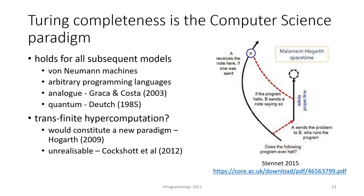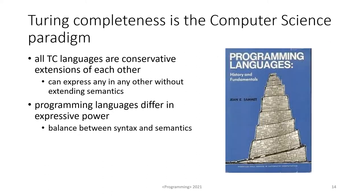What about trans-finite hypercomputation? Well, that really would constitute a new paradigm as Mark Hogarth has argued. However, Paul Cockshot, Lewis McKenzie and I have argued that it's both theoretically and practically unrealisable. Also, all Turing complete languages are what are called conservative extensions of each other — you can express any Turing complete language in any other Turing complete language without extending the semantics of the expressing language. Of course programming languages differ in expressive power, but that's to do with the balance between syntax and semantics, not anything fundamental about the languages themselves.